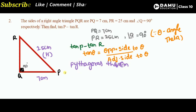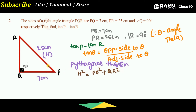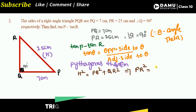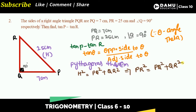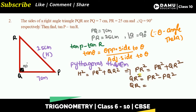From the Pythagorean theorem: hypotenuse squared equals the sum of the squares of the remaining two sides. That is PR squared equals PQ squared plus QR squared. We need to find QR, so QR squared equals PR squared minus PQ squared, and QR equals the square root of PR squared minus PQ squared.